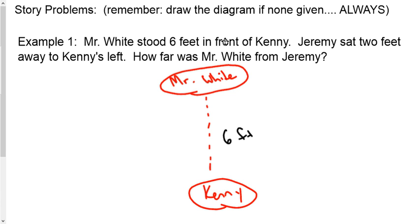Mr. White stood six feet in front of Kenny. You notice I'm rereading the problem and I'm comparing to what I just drew. So that way I can make sure that it's matching up with what I read. Now Jeremy sat two feet away to Kenny's left. Here's Kenny. He's facing Mr. White we're assuming. And so let's just say that Kenny's left right here is two feet. And that's where we'll put Jeremy.